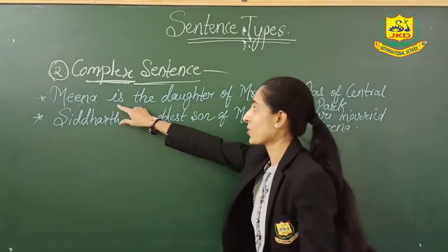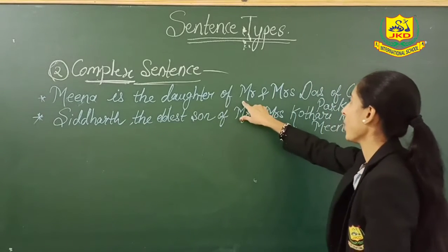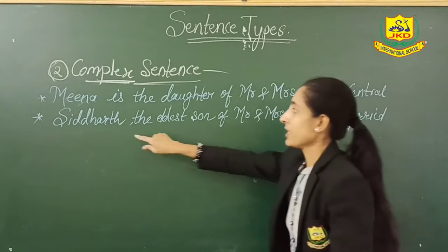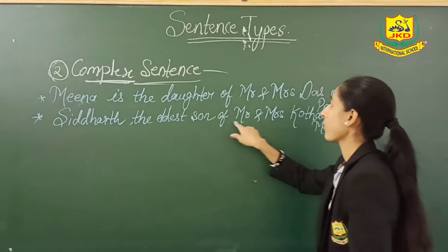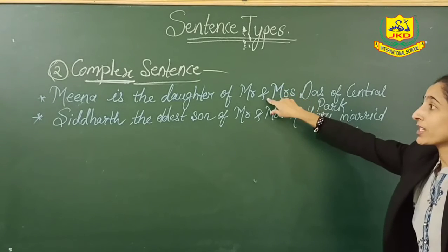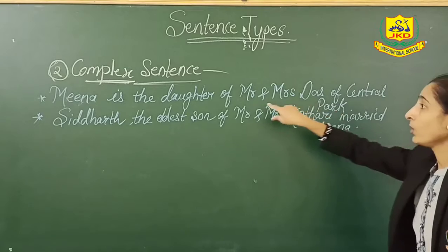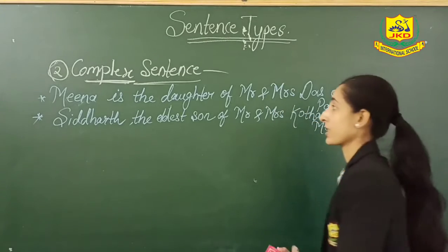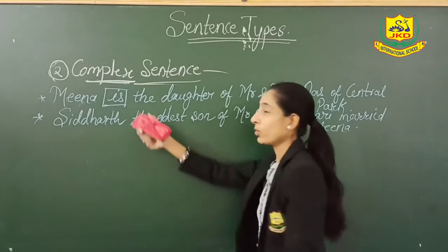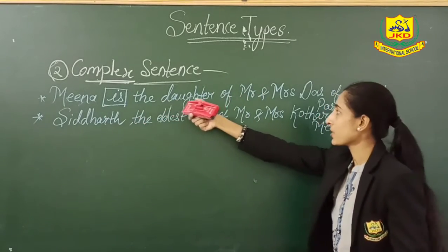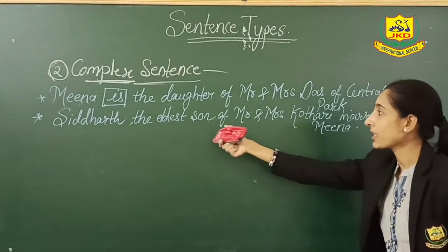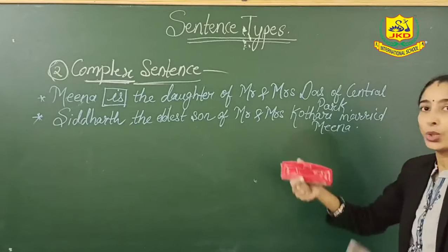I wrote two sentences. The first one is: Nina is the daughter of Mr. and Mrs. Das of Central Park. The second is: Siddharth, the eldest son of Mr. and Mrs. Kothari, married Meena. In the first sentence, you can find only one verb. There is no other verb in the sentence. In the second sentence also, you can find only one verb.